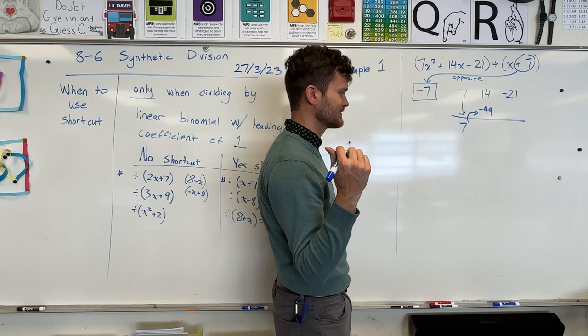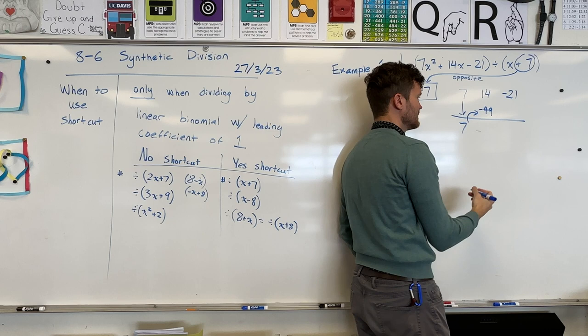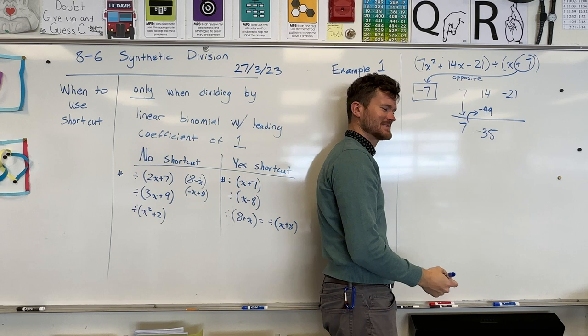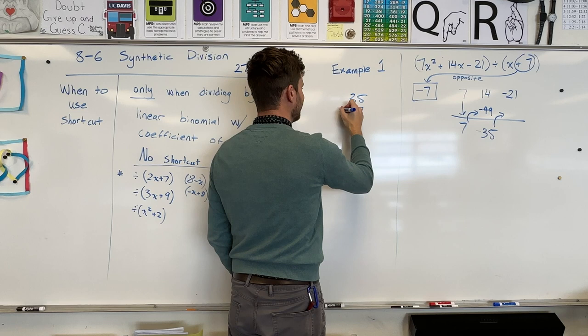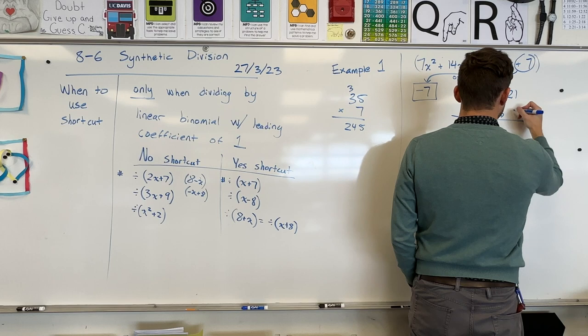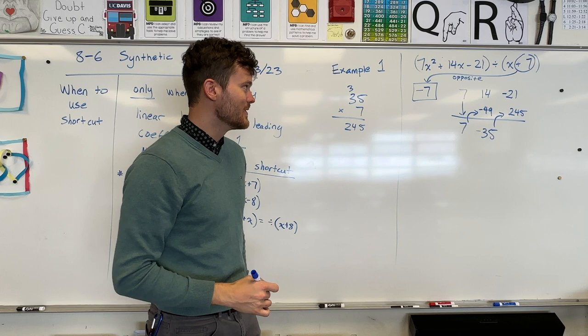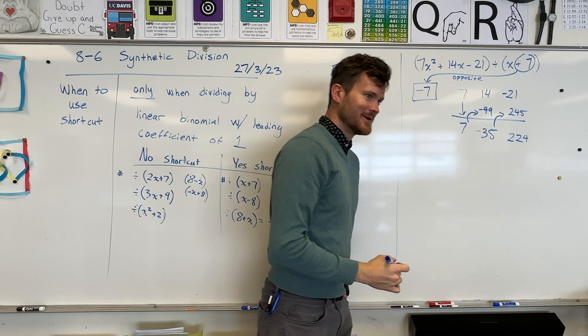I'm going to give you a nicer problem in a second — one that's actually from classwork so you can see how clean it is. This one was a gross problem. Negative 49 and 14 adds up to a negative 35. Now pay your toll person again going up past the diagonal: negative 35 times negative 7 gives positive 245. Combine negative 21 and 245 to get 224.